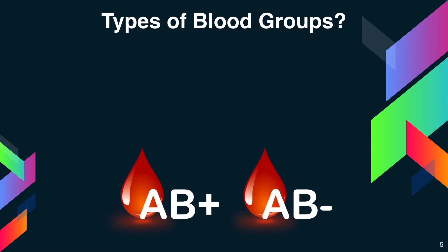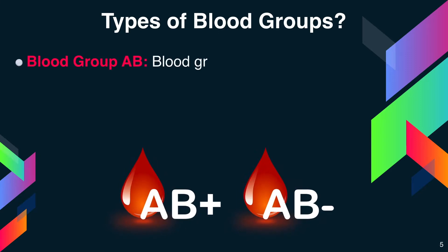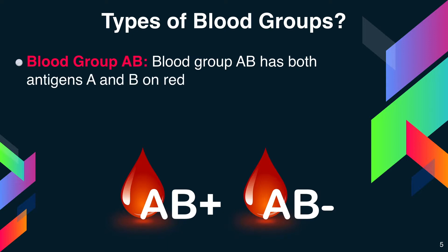Next, blood group AB. Blood group AB has both antigens A and B on the red cells but has no antibody in the plasma. AB is classified into AB positive based on the presence of Rh factor and AB negative based on the absence of Rh factor.